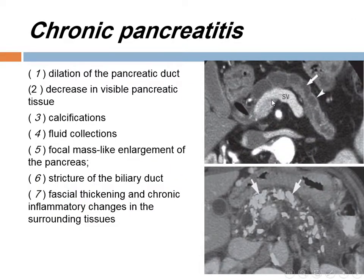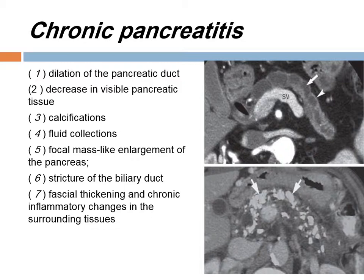Chronic pancreatitis: the most common causes are alcohol and gallstones. Radiologically, we can see dilatation of the pancreatic duct in 70 to 90%, which appears as a beaded appearance with dilatation and constriction, decreased visible pancreatic tissue due to atrophy, calcification, fluid collection either intrapancreatic or extrapancreatic, focal mass-like enlargement of the pancreas, stricture of the biliary duct, and fascial thickening.